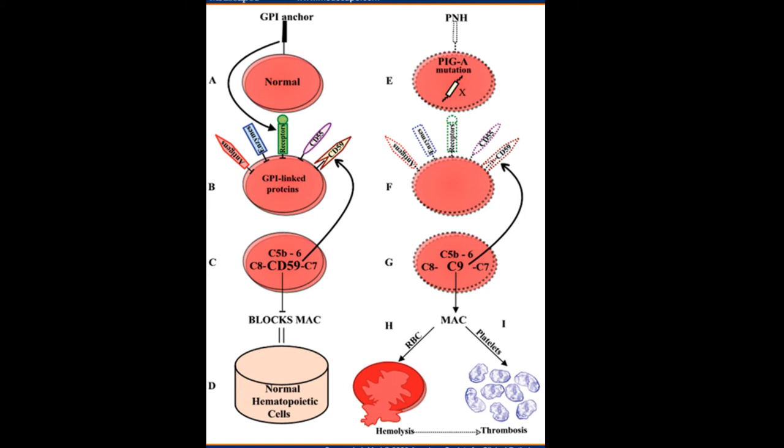In some people, the PIGA gene is defective. This forms a defective GPI anchoring protein that is not as stable as it should be. Therefore, as soon as something aggravates the complement system, it will start to attack the body's own blood cells.